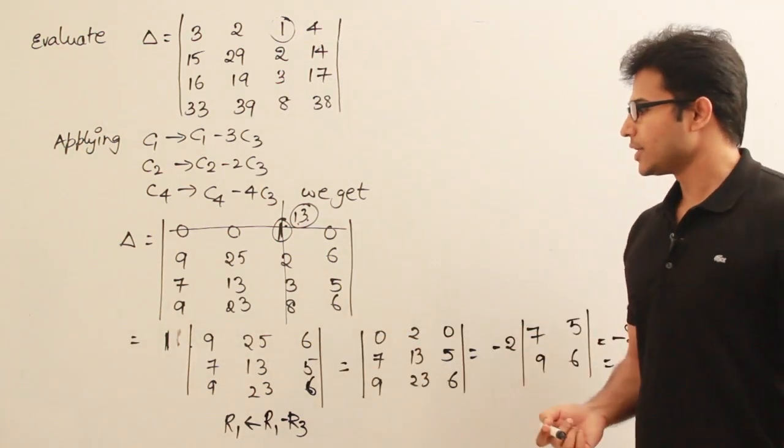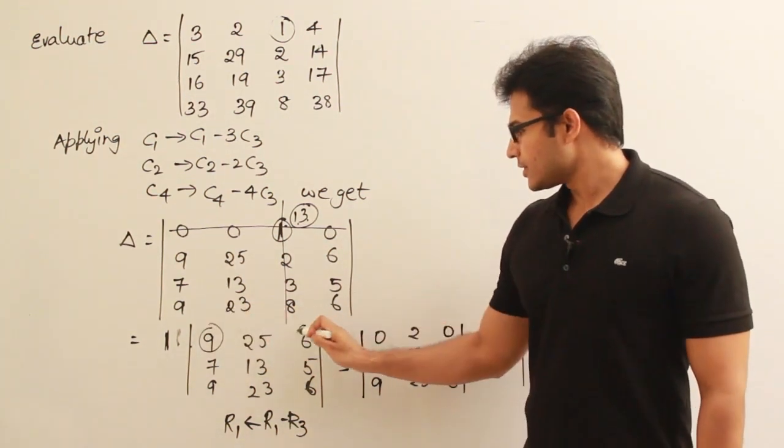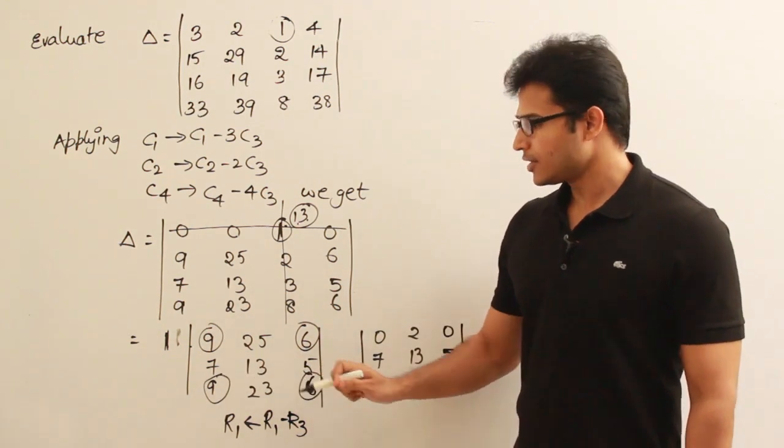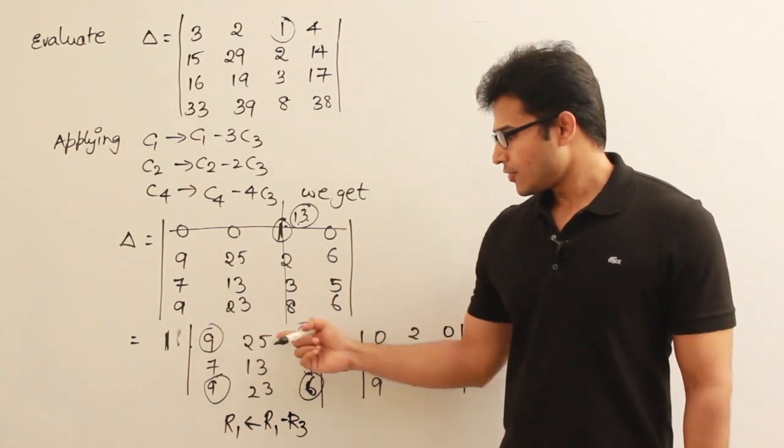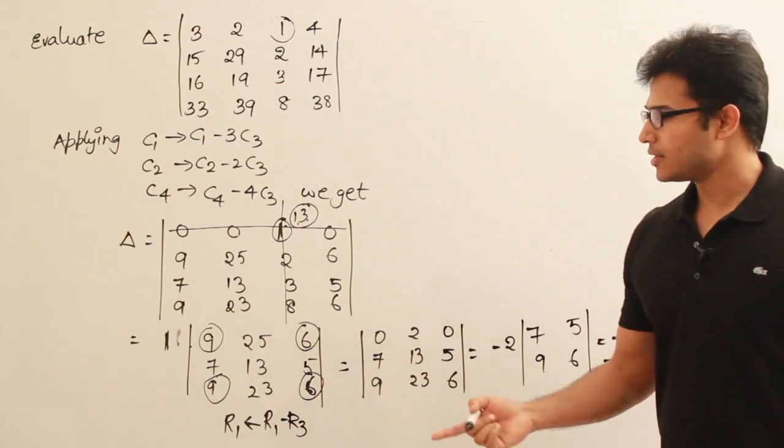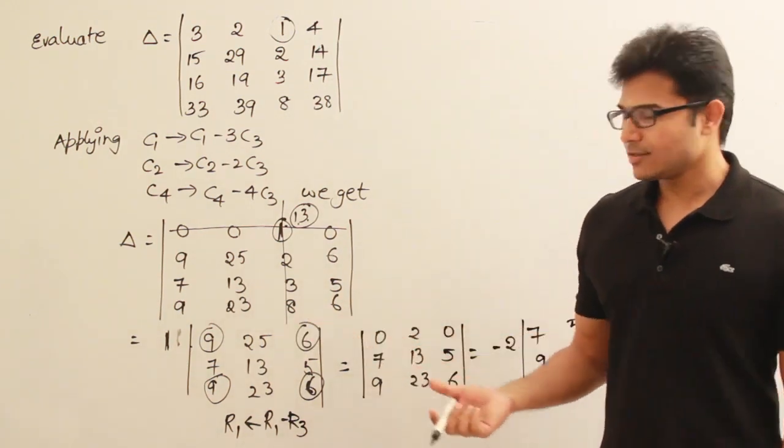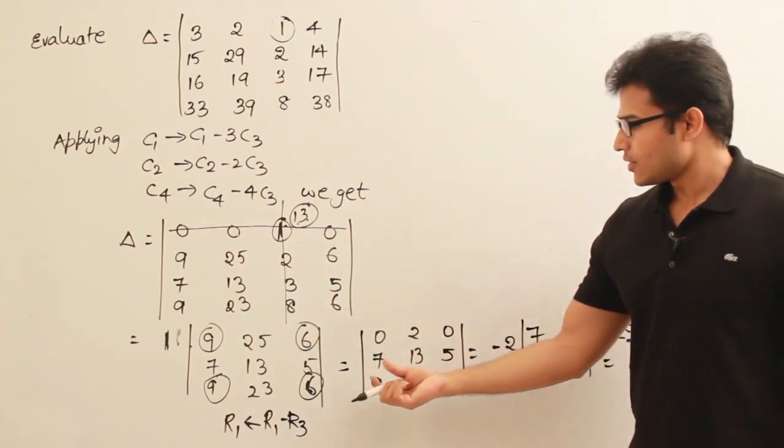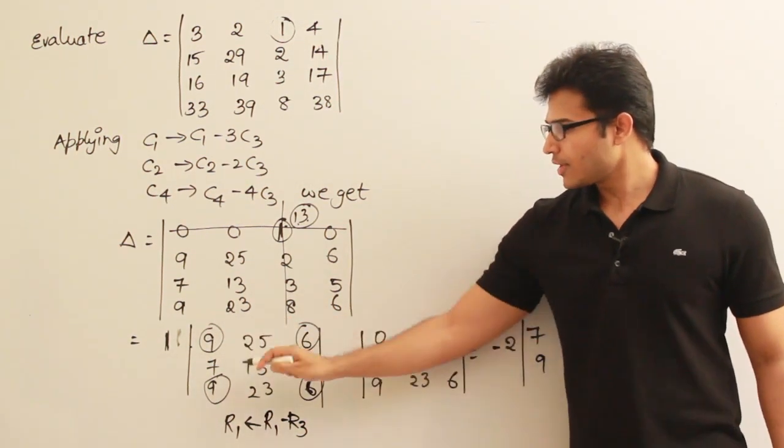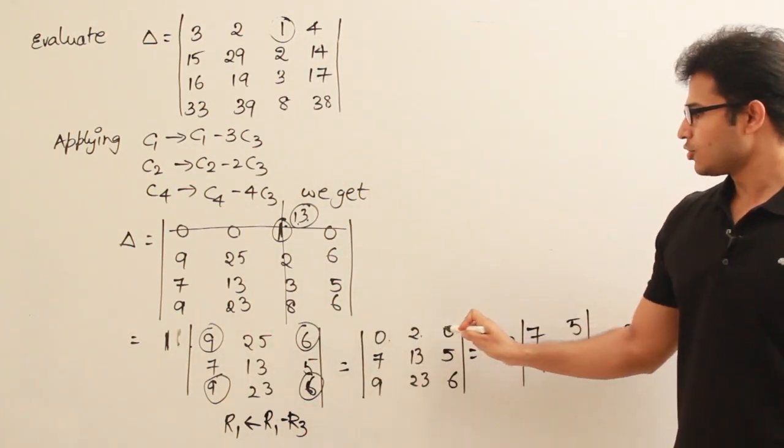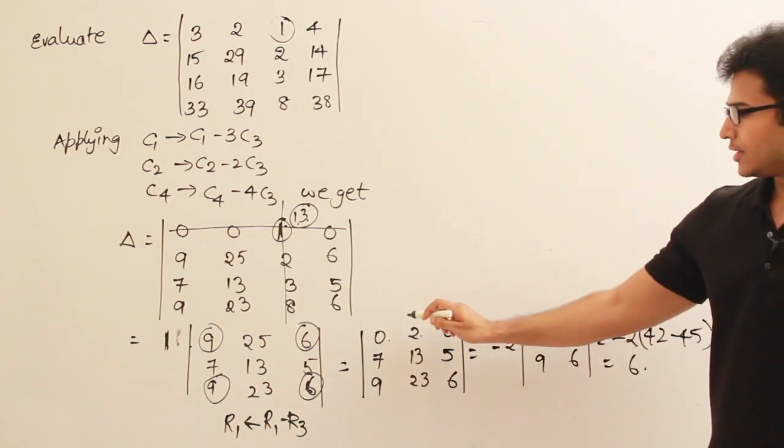If you observe this particular determinant of order 3, again you can see that this element is common with this element and this element. Therefore it is easier when you subtract from this row. If you subtract R3 from R1, it will be easier for us to find out the determinant. When we subtract this entire row from R1, I am going to get 0, 20, and all this.